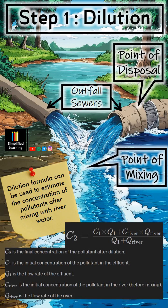Step 1: Dilution. When pollutants enter a river, the first mechanism of self-purification is dilution. The river water mixes with the incoming polluted water, spreading the pollutants over a larger volume. The effect of this process is that it reduces the concentration of pollutants, making them less harmful immediately. The higher the flow rate of the river, the more effective the dilution will be.